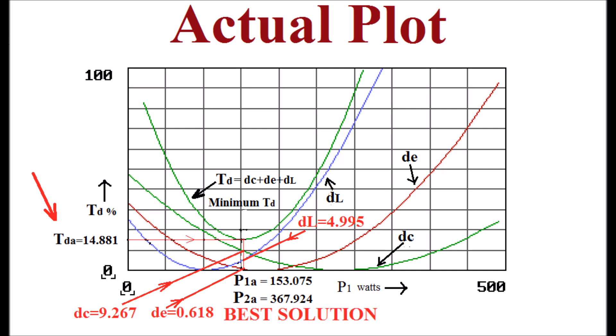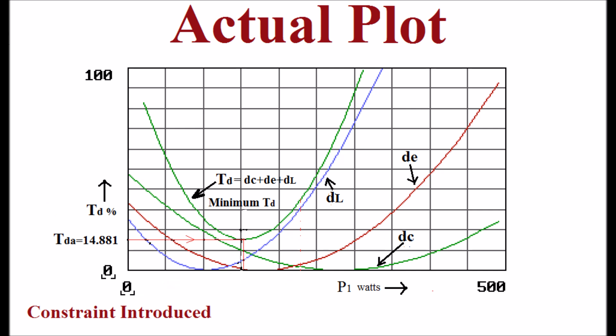If any constraint introduced, i.e., now the output power of the generator 2 is fixed at 300 watts. Then the percentage total deviation increased to 33.33 and the cost deviation 1.602 which is less comparing with the best. But the deviation of emission increased to 2.297 from the best. And loss deviation increased from 4.995 to 29.431.